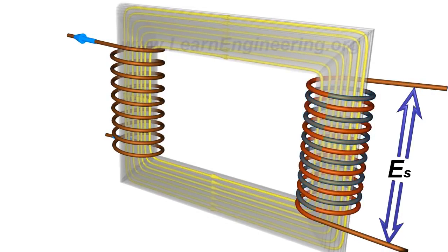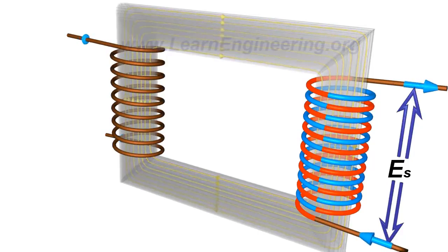Since the turns are arranged in series, the net EMF induced across the winding will be the sum of the individual EMFs induced in each turn.